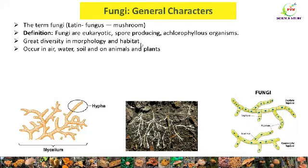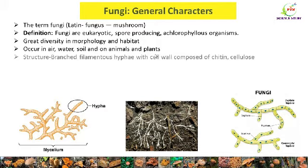Fungi occur in air, water, and soil, and they are also present as parasites on animals as well as plants. The vegetative structure of fungi is usually the branched filamentous hyphae, having a cell wall made up of chitin or cellulose, or both.